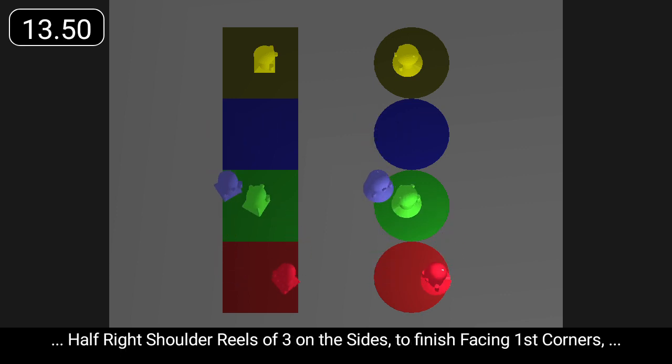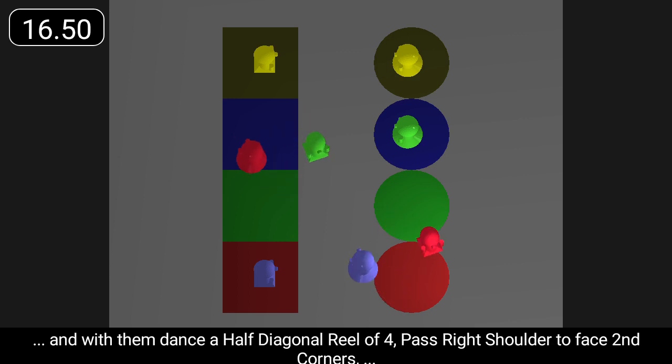Half right shoulder reels of three on the sides to finish facing first corners and with them dance a half diagonal reel of four past right shoulder.